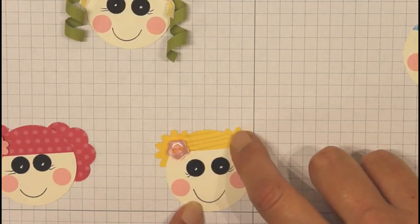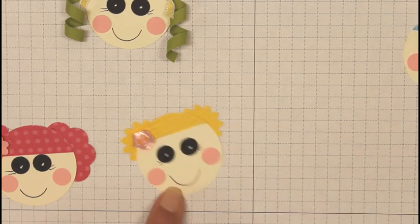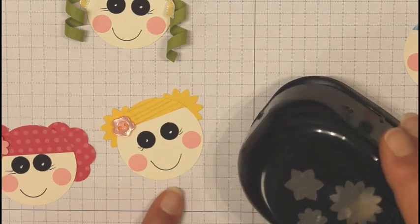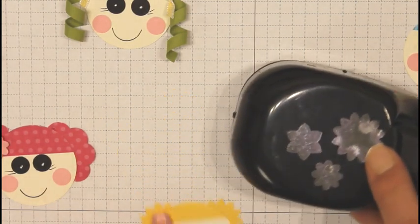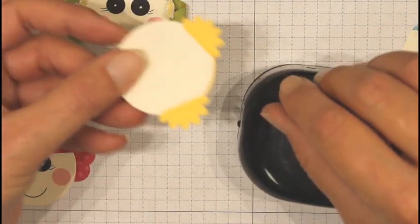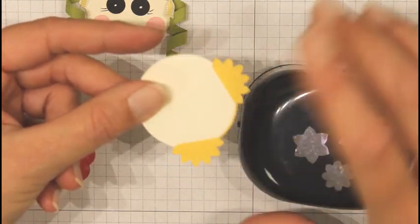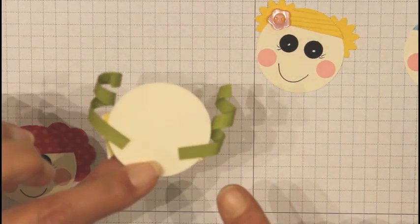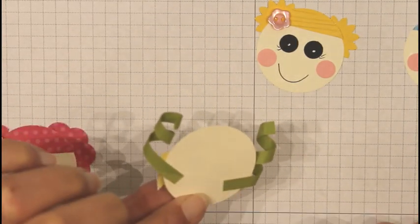And then for this one, I did the embossing folder again. And for her hair, I used the Boho Blossoms punch again. And I used the biggest flower and cut it in half. So you can see the back. I just cut it in half and attached it to each side. And for this one, I just attached her pigtails in the back with a little mini glue dot.